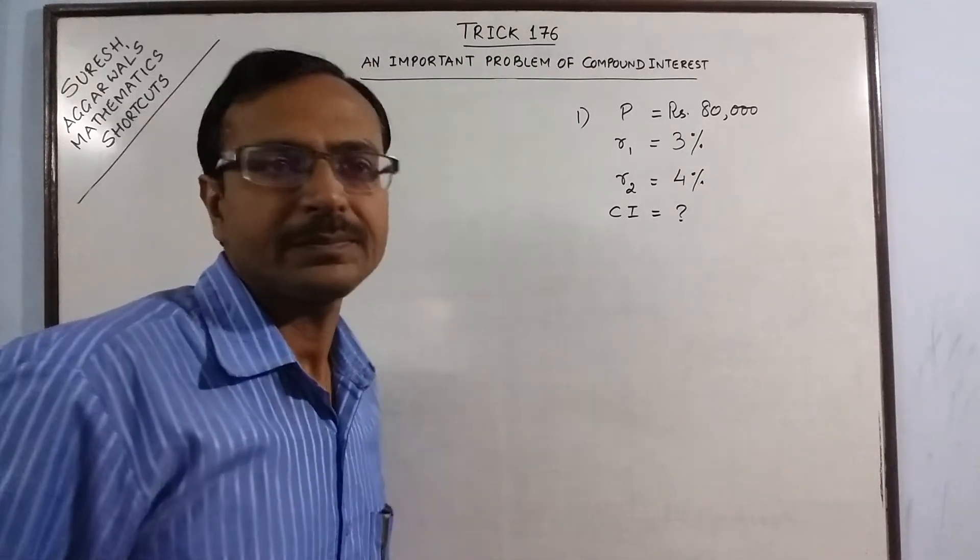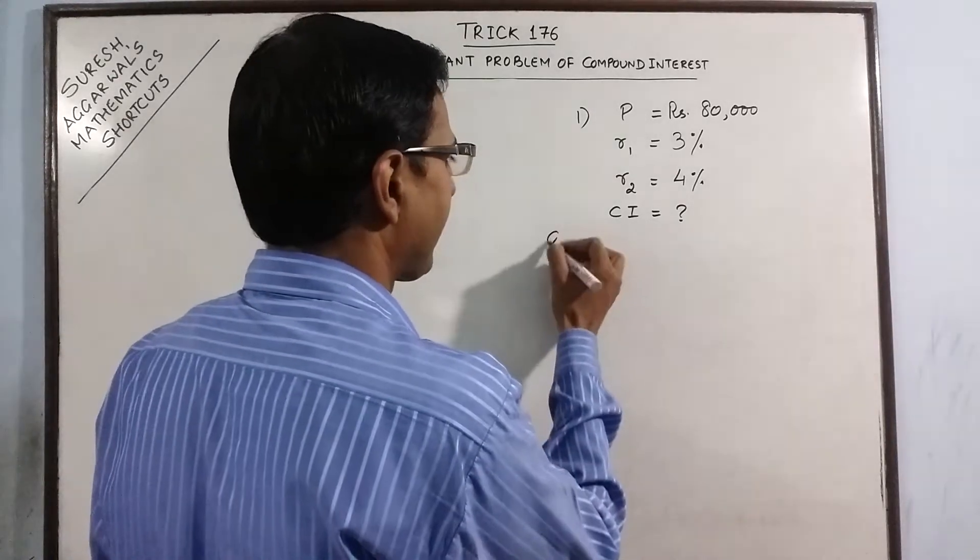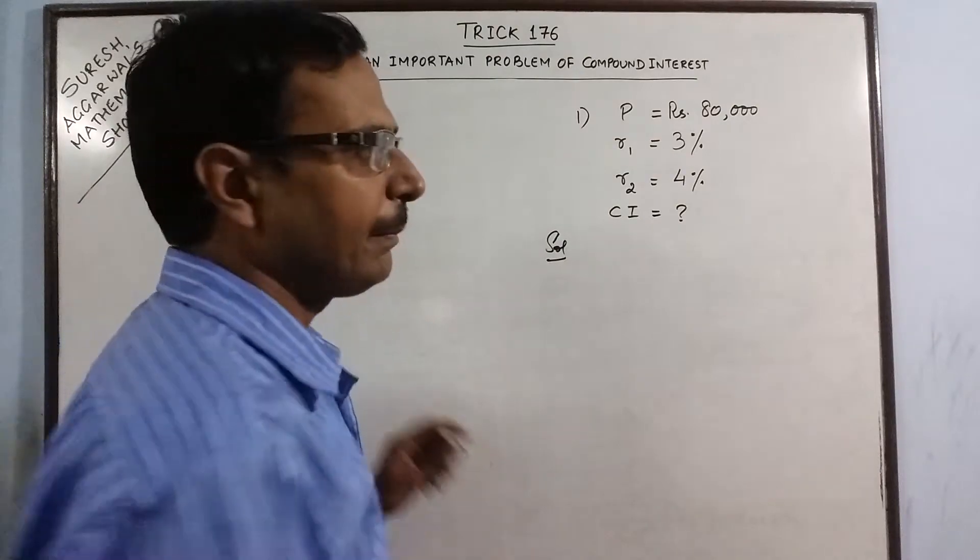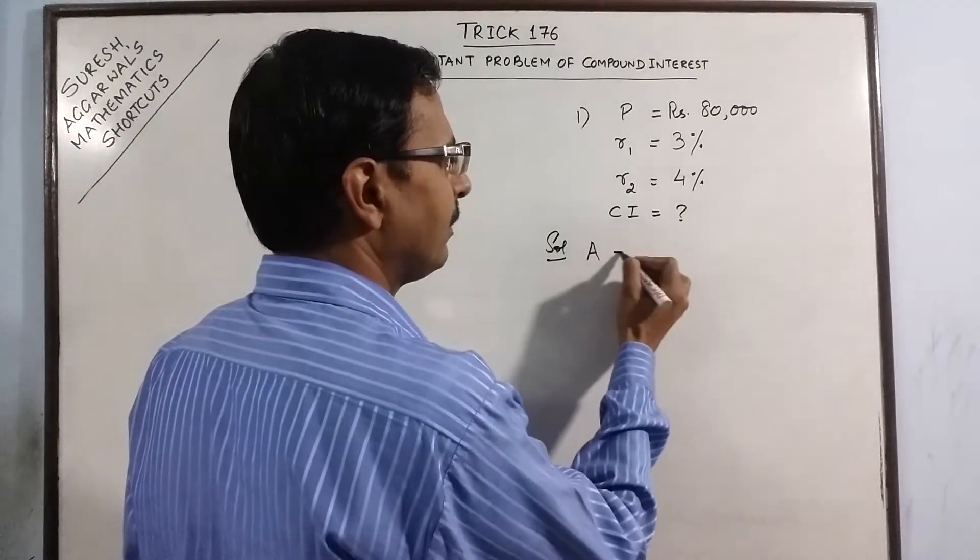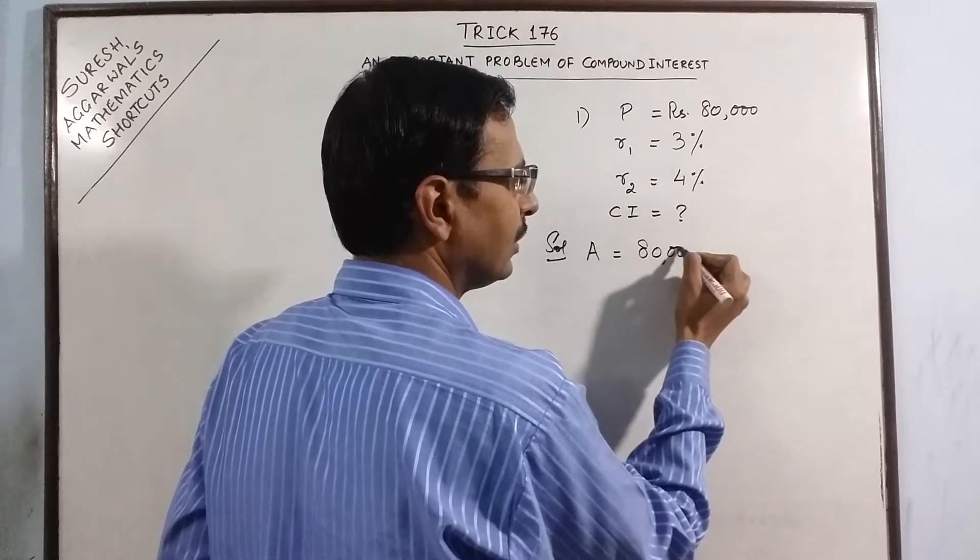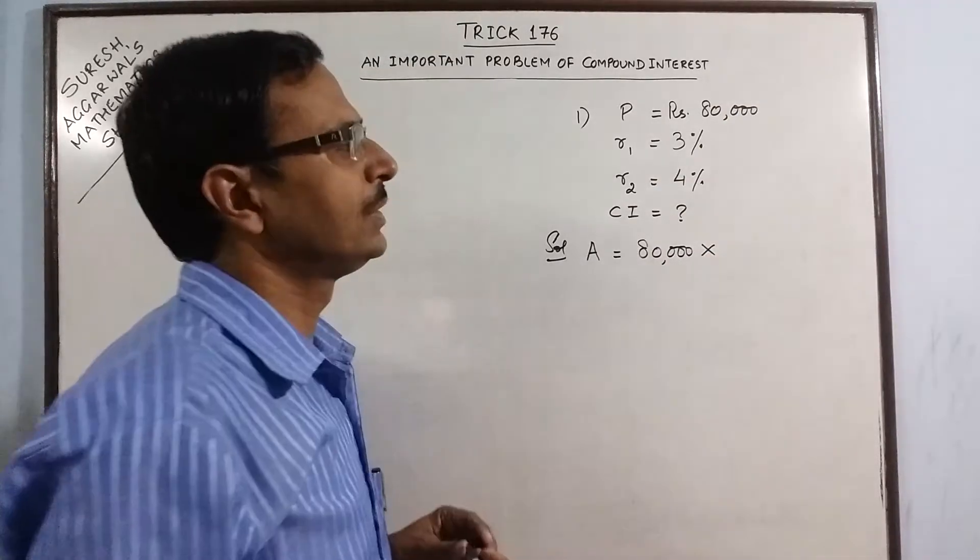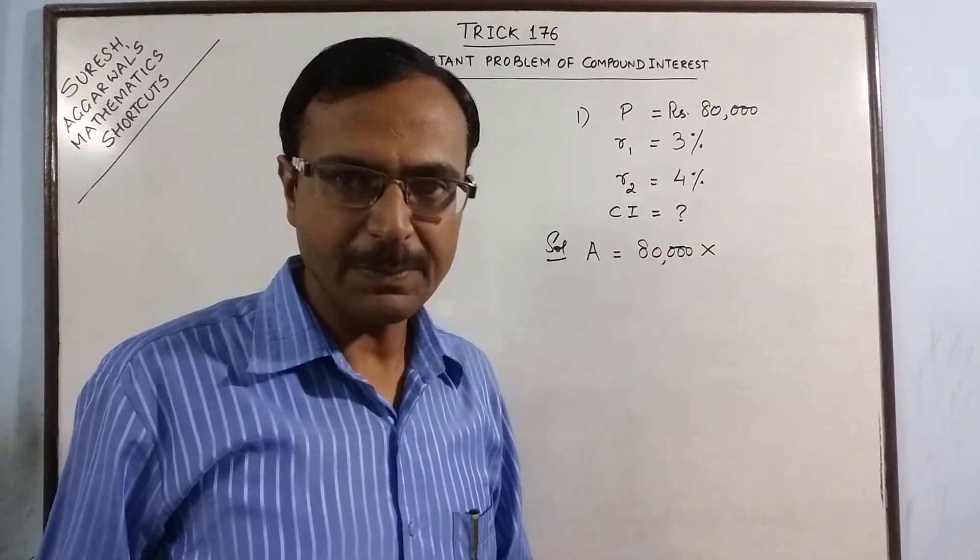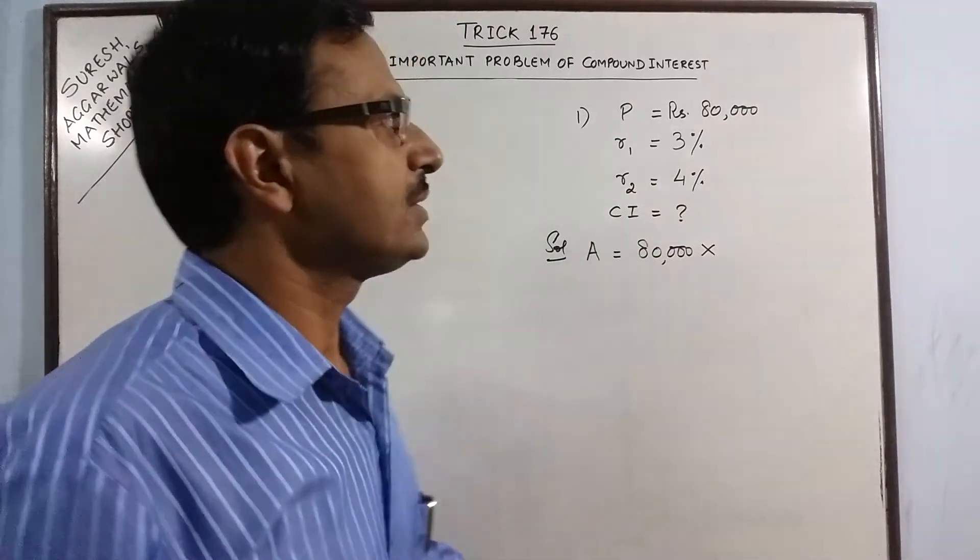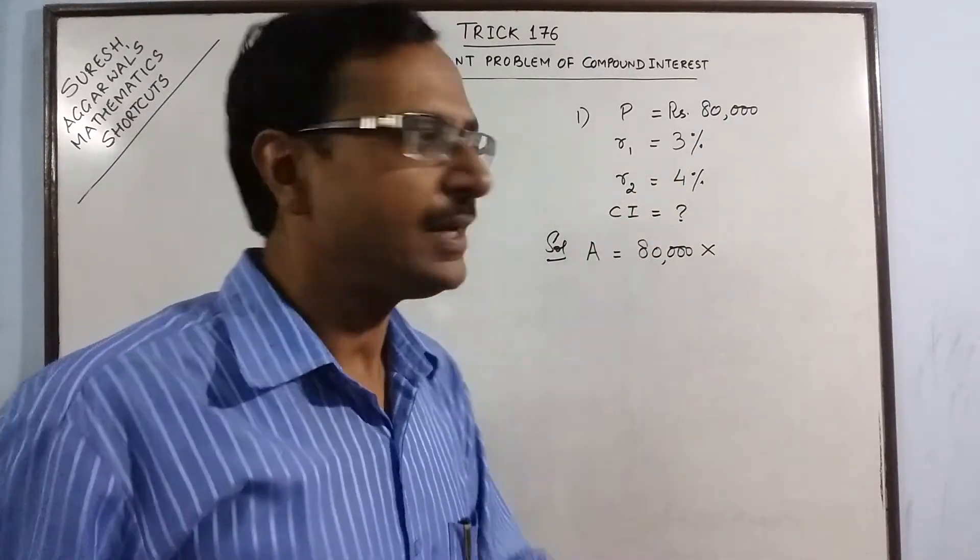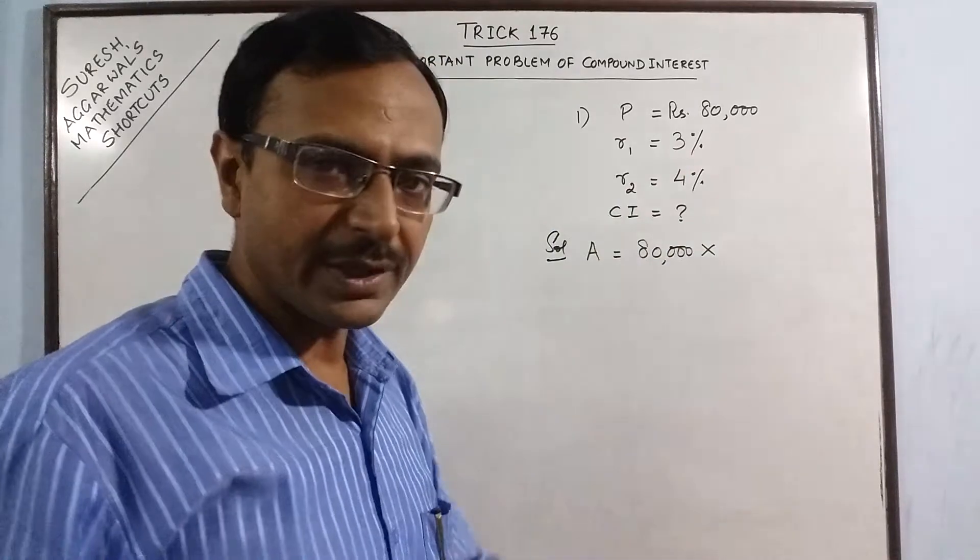So in such cases, the amount is obtained by multiplying the principal with, see the rate of interest for the first year is 3% per annum. So what you do is just increase 100 by 3 that is 103. So 100 plus 3 gives you 103.